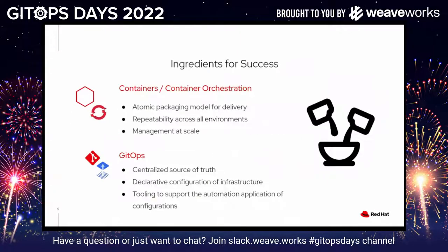What are the ingredients that make this possible? Number one, it's containers and a container orchestration system, and that's really where Kubernetes comes in. Containers enable an atomic method for packaging all of your application dependencies into a single atomic unit. They also enable repeatability across any environment, whether it be on your local machine, in a development environment, or all the way through to production. By leveraging a container orchestration system, you can manage at enterprise scale — scale up, scale down, and react as new requirements come in.